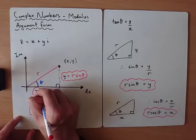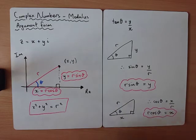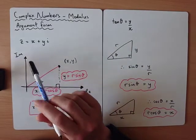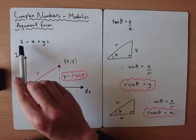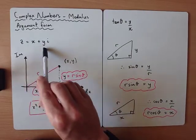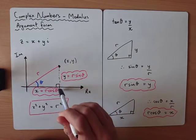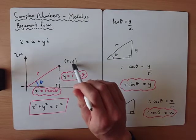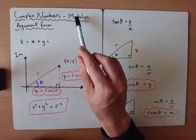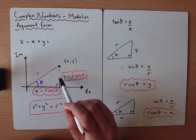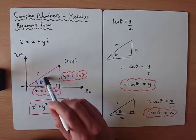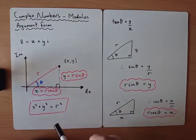There's quite a bit coming together here — Pythagoras, SOHCAHTOA, Argand diagrams, complex numbers, angles, and distances. To summarise: a complex number in Cartesian form has x as the real part and y as the imaginary part, but in modulus argument form we define it by the distance r from the origin and the angle θ turned through.